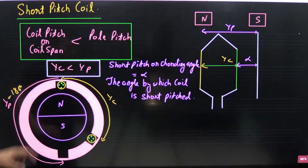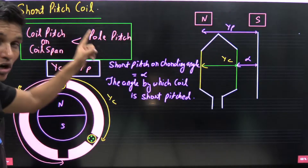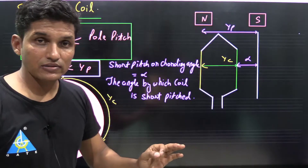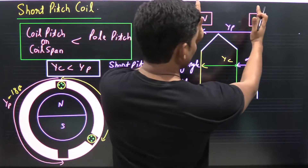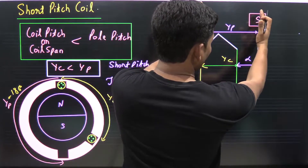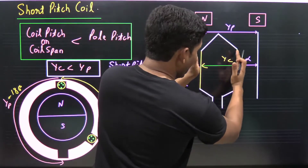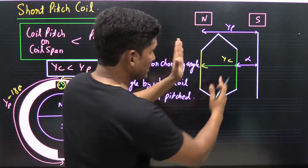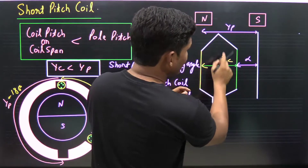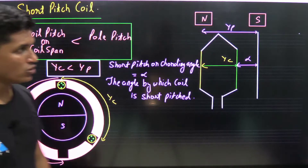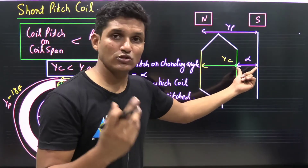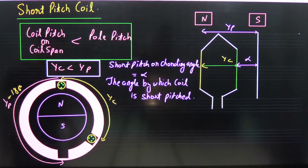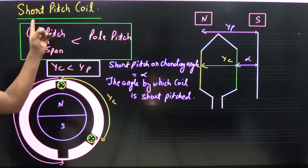Whereas in a short pitch coil, the coil pitch or coil span is less than pole pitch. The distance between north and south is YP, that is the pole pitch. But here the coil is short pitch by some angle. The distance between the coil sides is YC, which is less than YP. So it is chorded or short pitch by some angle, known as alpha — the cording angle or short pitch angle. So when YC is less than YP, it is known as a short pitch coil.